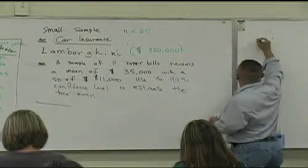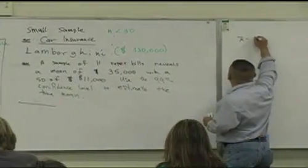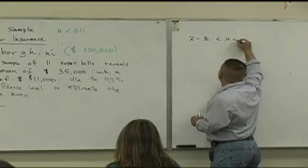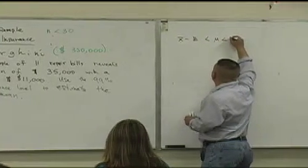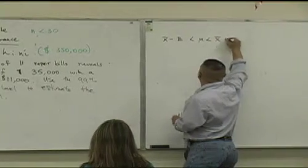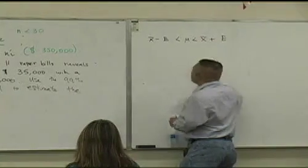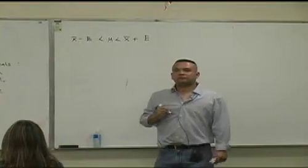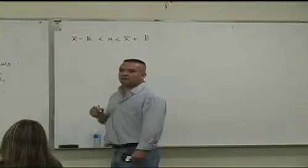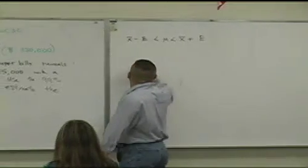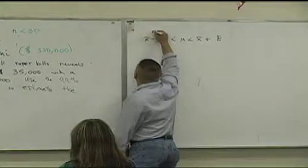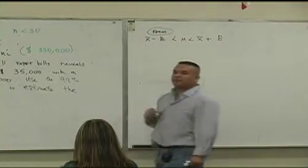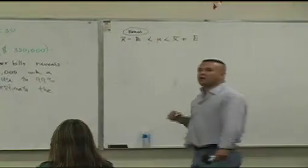It's going to be what? It's going to be the mean minus the error, less than true mean, less than the mean plus margin of error. Okay. And so we're using our mean format, the estimate the mean format. Is that right? Yes. Okay.